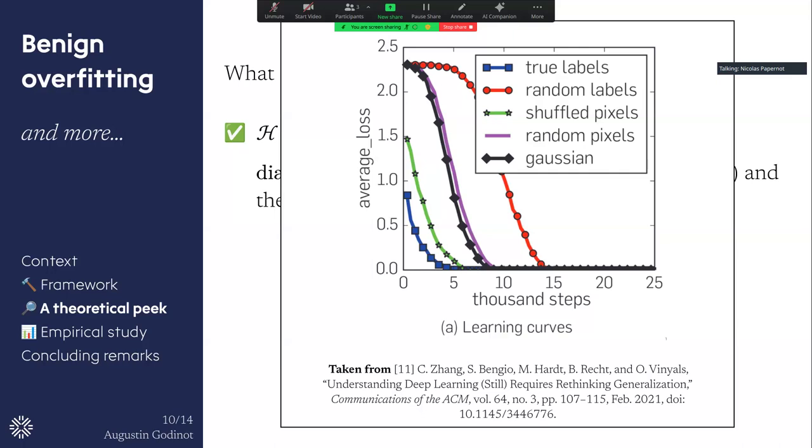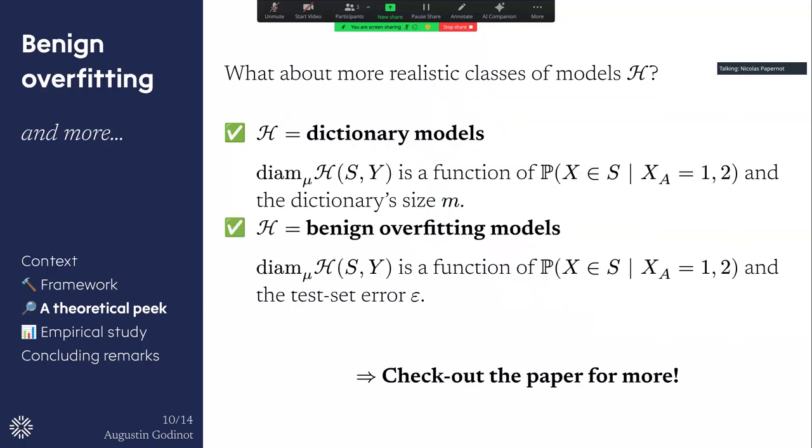Then they will still be able to appear fair to the auditor and then also have good performance, even at the cost of fairness, on the rest of the input space. So here we showed that the guarantees depend, again, on the proportion of points that are sampled in the two sensitive groups and on the test error of these benign overfitting models.